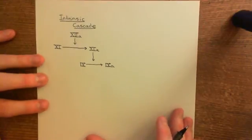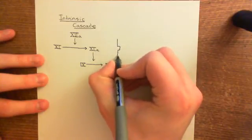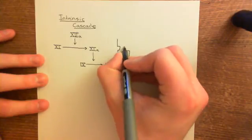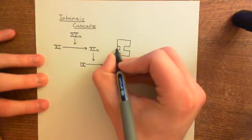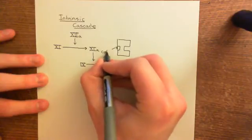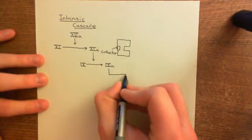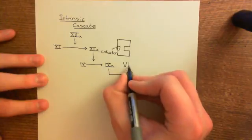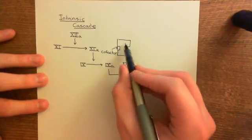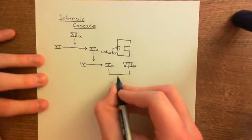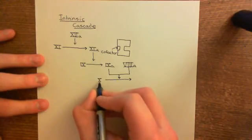Factor 9a requires a cofactor in order to work. You have activated 9a, and in order to form an active enzyme, it needs one final little protein to bind to a socket — this is known as the cofactor for that enzyme. The cofactor for factor 9a is factor 8a. Factor 8a is a small protein which binds to factor 9a, and together they form a complex which catalyses the conversion of factor 10 into factor 10a.